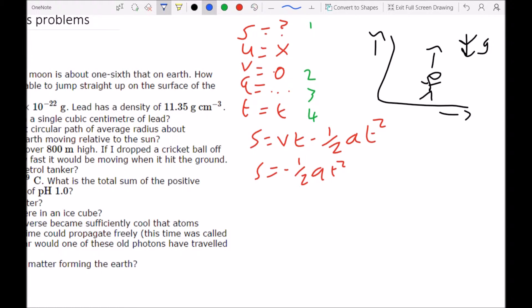So if we use blue for the Earth, the acceleration on Earth is just g, but it's going down. So give it minus g, which means the height someone can jump on Earth is s equals half g t squared.